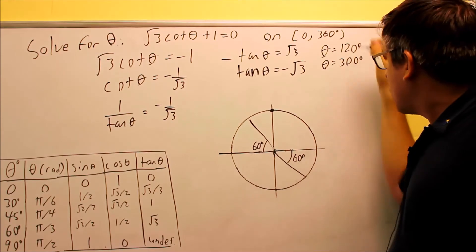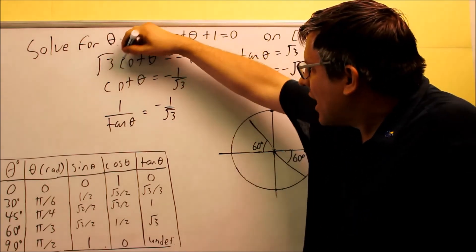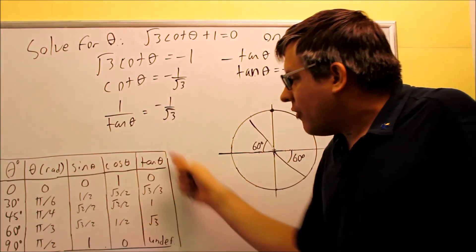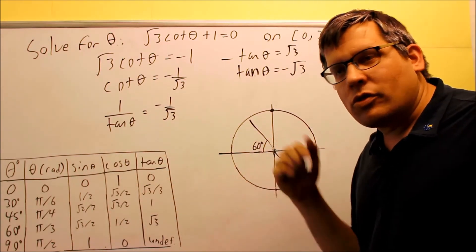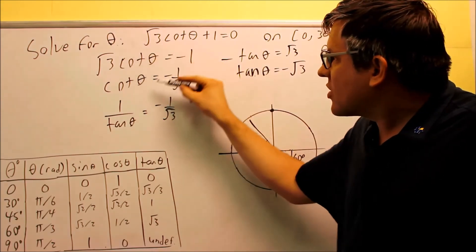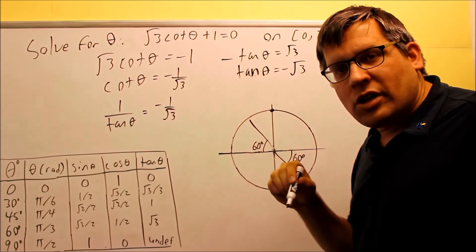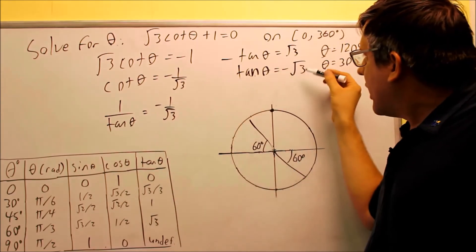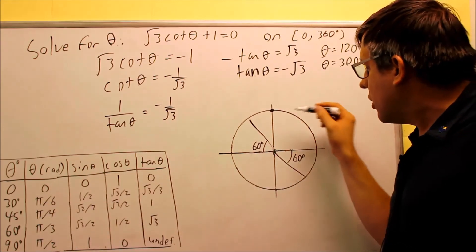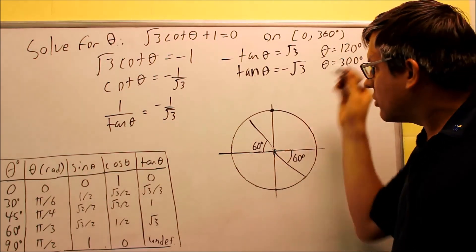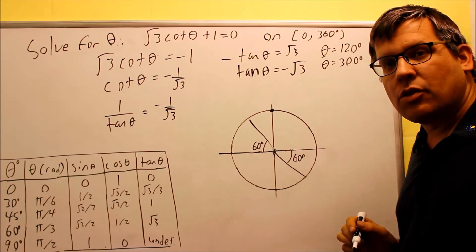So we have two answers: 120 degrees and 300 degrees. Whenever you have something like this that's not a value on our table, you want to use one of the reciprocal identities in order to solve for it. We isolated the cotangent theta, put in the identity for 1 over tangent, cross-multiplied, and saw that the value on our table was square root of 3 at 60 degrees. We drew it in the second and fourth quadrant because that's where tangent is negative, and that got us our two answers: 120 and 300.